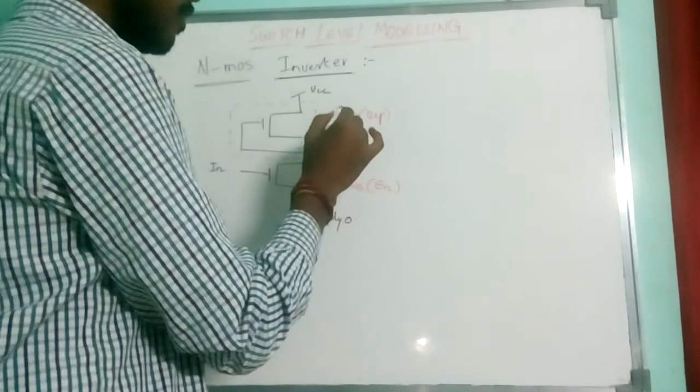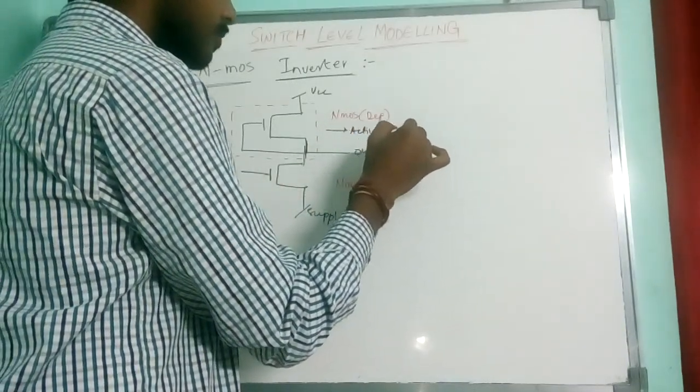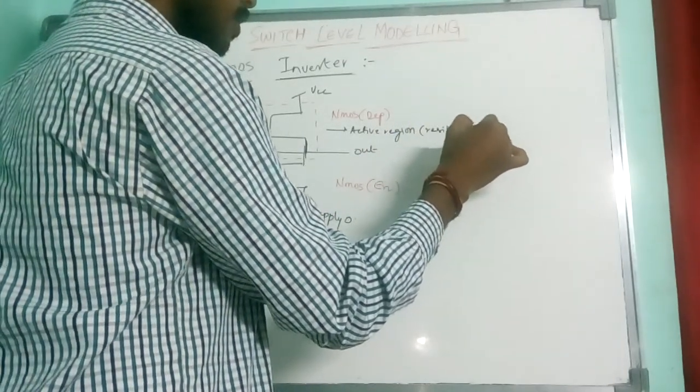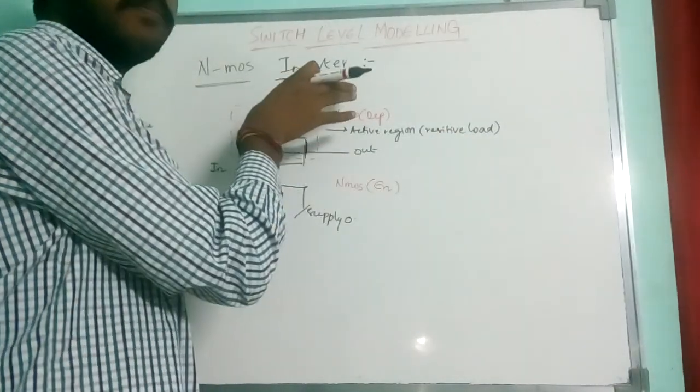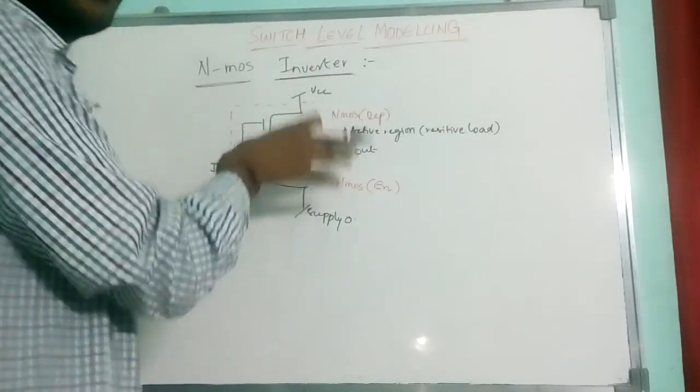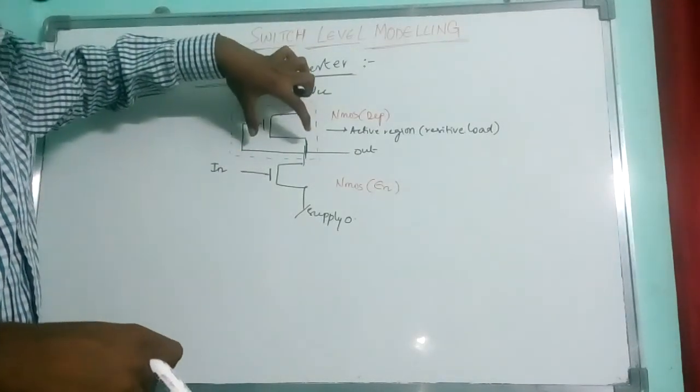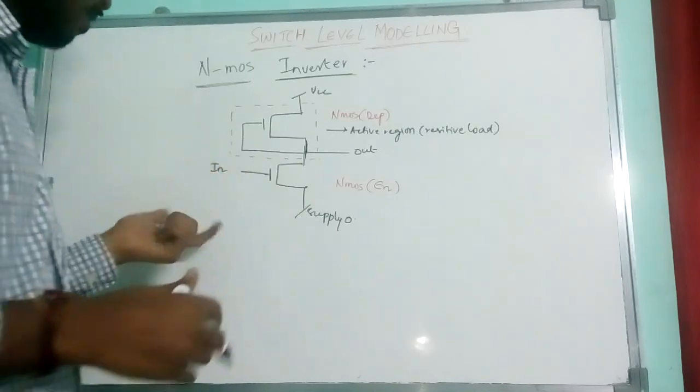The depletion mode MOSFET will be in the active region. It acts as a resistive load. This is called pull-up resistor or pull-up transistor, whereas this is called pull-down. This part acts as a resistive pull-up load for this transistor.